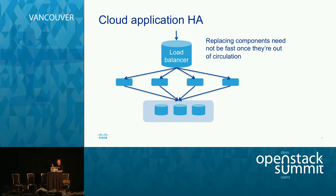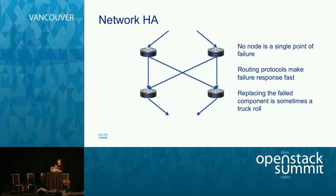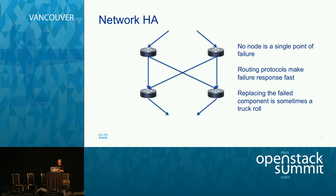The reason I bring this up is that the people I work with think in terms of network HA, which is very different. In network HA, you have a bunch of routers with networks between them, designed so that no single node and no single link is a single point of failure. If you lose a link or a node, everything keeps running. Routing protocols make failure response very fast — you detect the failure and reroute traffic to its destination.